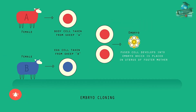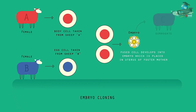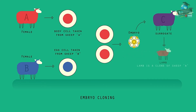When the embryo has developed into a ball of cells, it is inserted into the womb of an adult female surrogate to continue its development — so three different adults are used. The baby born will be a clone of the adult that donated the body cell, because it has the same DNA.